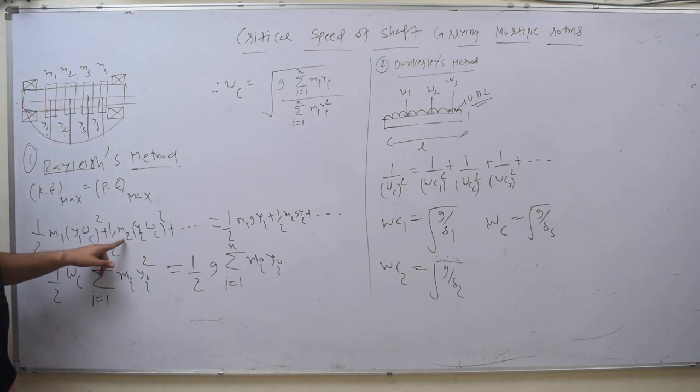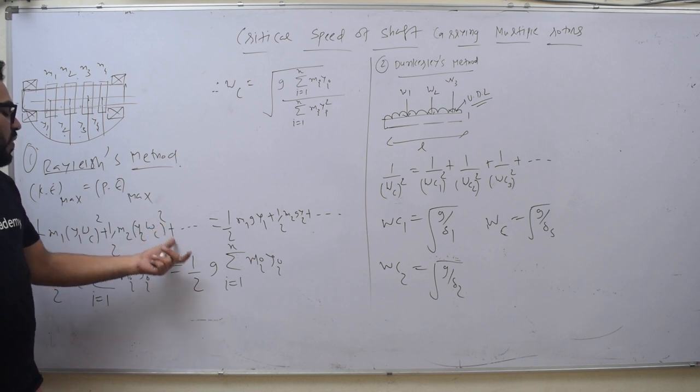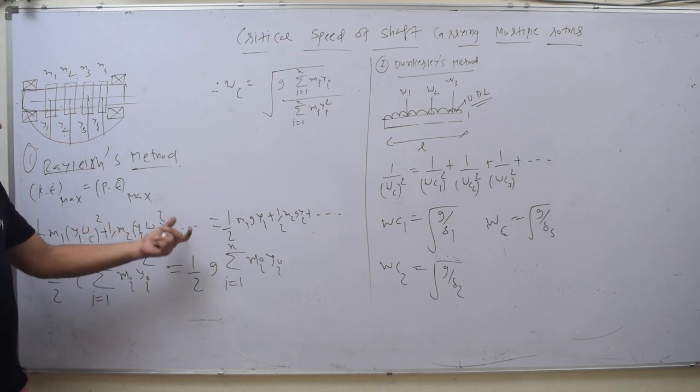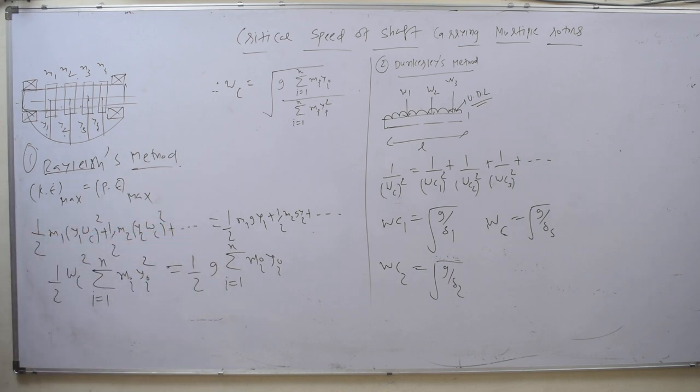One half M2, Y2 omega C square whole square. Plus for third, then 1 by 2 M3, Y3 omega C square whole square. In the same way, we need potential energy. What will be potential energy?